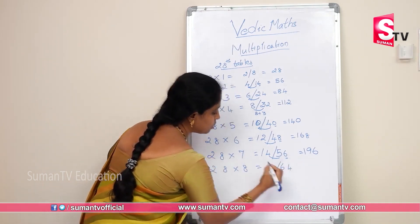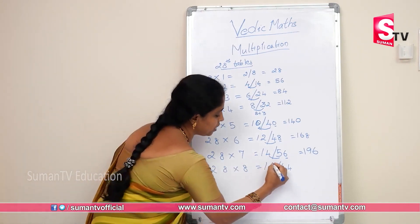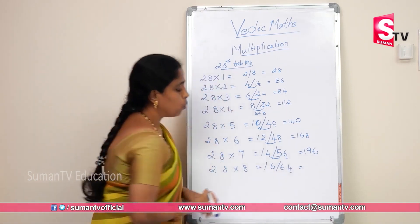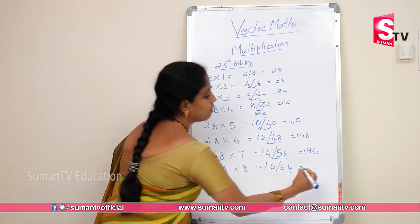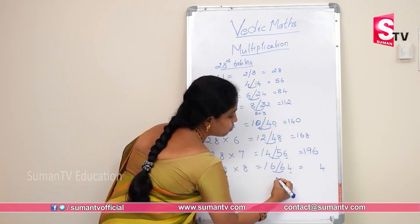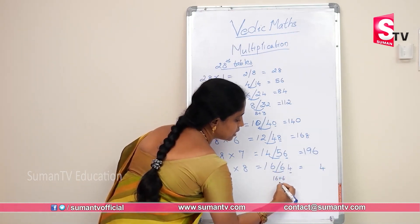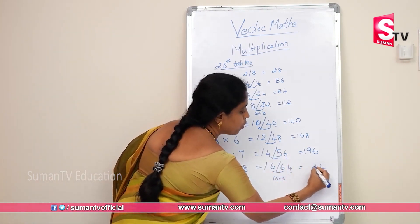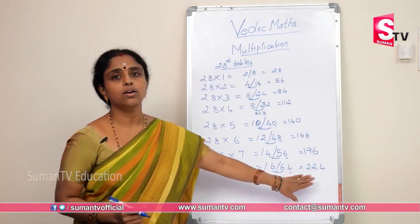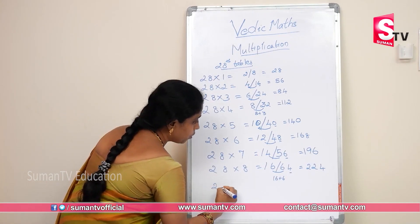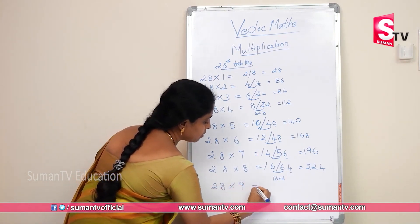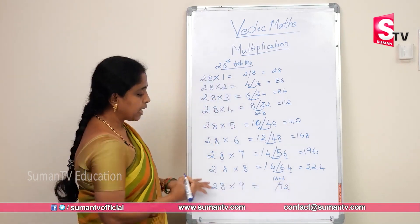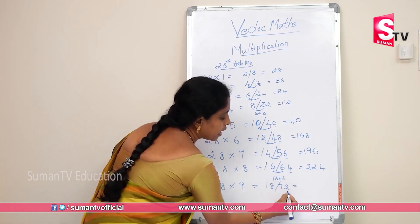28 × 8: eight eights are 64, put the slash. Eight twos are 16. Keep 4 in unit place. 6 plus 6 is 12, carry: that gives 22. So 28 × 8 is 224.